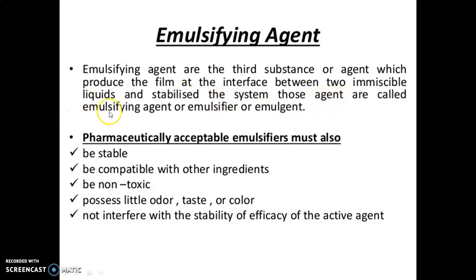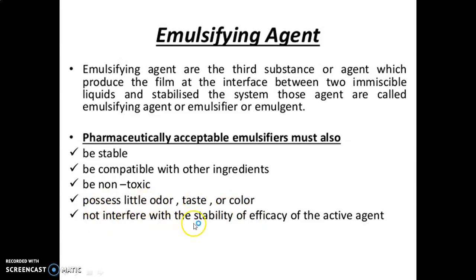These agents are called emulsifying agents, emulsifiers, or emulgents. Pharmaceutically acceptable emulsifiers must have stability — it must be stable, compatible with the other ingredients, strong, and non-toxic. It must possess little odor, taste, or color, and it should not interfere with the stability or efficacy of the active agent. There must not be any incompatibility between the active pharmaceutical ingredient (API) and the emulsifying agents.